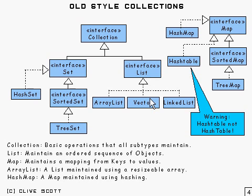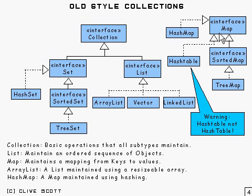The dotted lines in the diagram represent implementation — so these classes implement that interface, and that interface extends that interface. A list is just a list of objects; the list interface allows you to store and remove items. A map is a mapping between keys and values, so you can store keys with their associated values. A set is like a list except you can't have duplicates — it's like a mathematical set where an element is either in the set or it isn't.